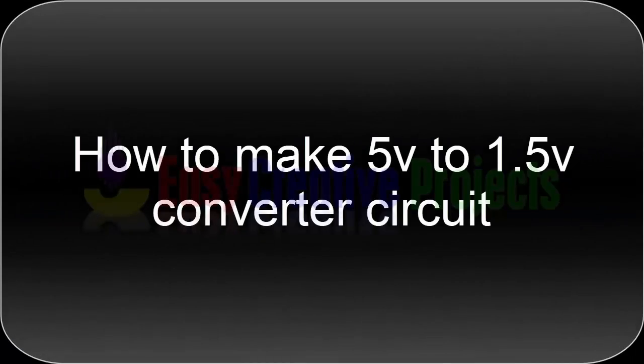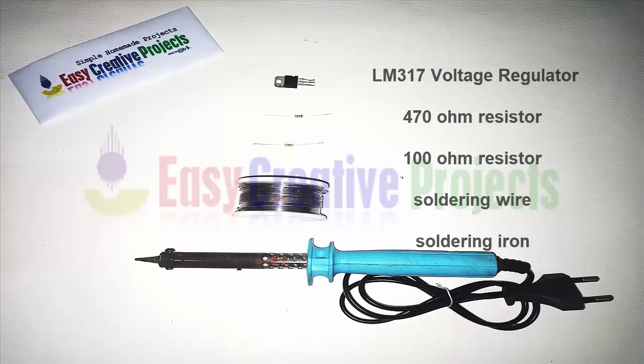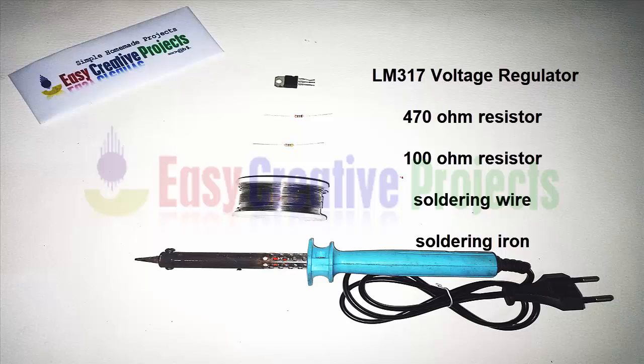Hello friends, today we'll learn how to make a 5 volt to 1.5 volt converter circuit easily at home. For making this project, we need some components: LM 317 voltage regulator, 470 ohm resistor, 100 ohm resistor, soldering wire, and soldering iron.